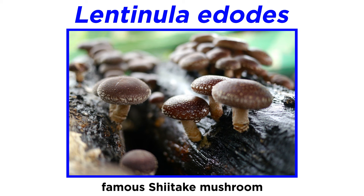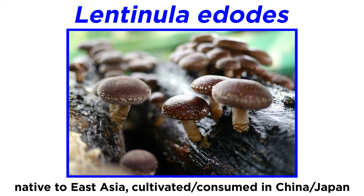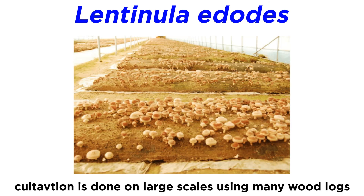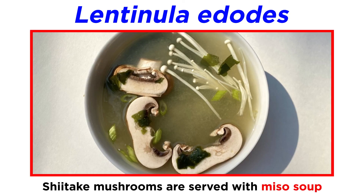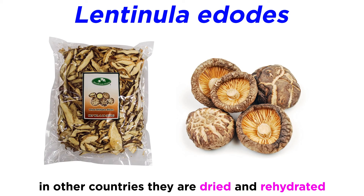The genus Lentinula, although genetically similar to Omphalotus, houses one of the most common edible mushrooms, Lentinula edodes, or the shiitake mushroom. Shiitake is native to East Asia and is widely cultivated and consumed in China and Japan. Cultivation of these mushrooms generally requires wood logs to grow effectively. Logs have holes drilled into them, then pegs of shiitake mycelium grown in sawdust are placed in those holes. Over time the mycelium fills the log, and fresh shiitake mushrooms fruit from it. In Japan, shiitake mushrooms are served with miso soup and provide flavor in broths or stocks. In countries other than Japan, you can commonly find them dried and then rehydrated at home for recipes.